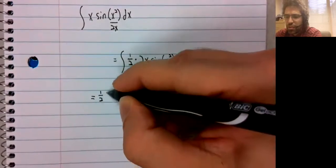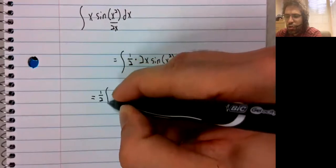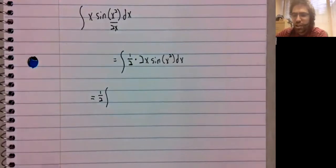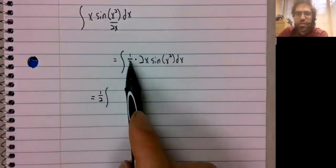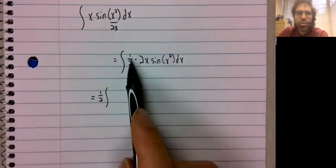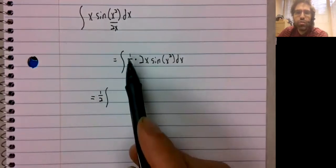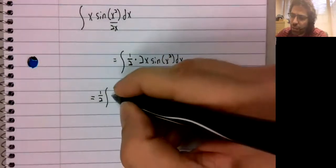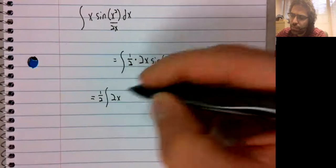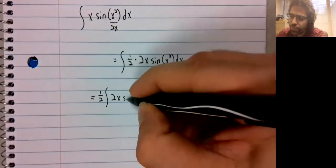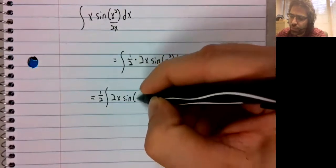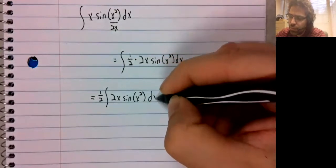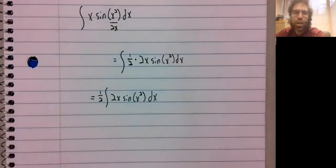And if we now recall a property we called linearity, it says if we've got constants, we can pull them out of the integral. So this one half can come out, like so.